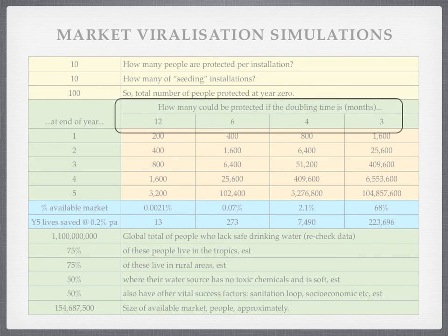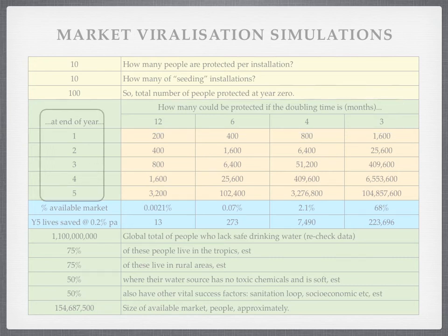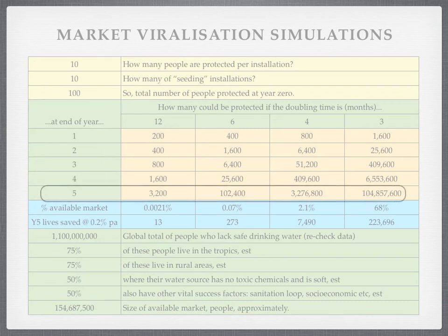What if you do manage to get viralisation? You may not get the people in those areas copying the technology fast. But if every 12 months they doubled the number of installations, or every six months, four months, or three months — what sort of numbers of people would you be able to save in terms of lives at the end of years 1, 2, 3, 4, and 5? At year five, if your doubling time was 12 months, you'd protect 3,200 people — worth about 13 lives saved. If you had a six-month doubling time instead, you would protect over 100,000 people and save nearly 300 lives.